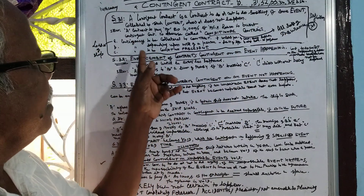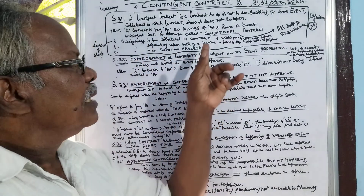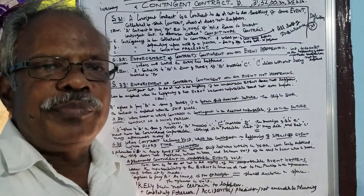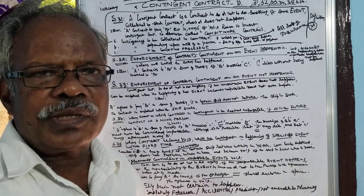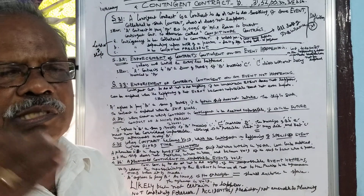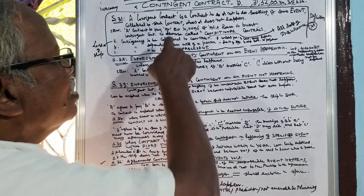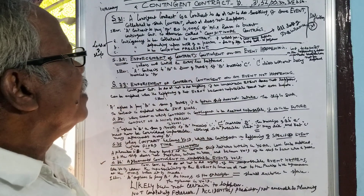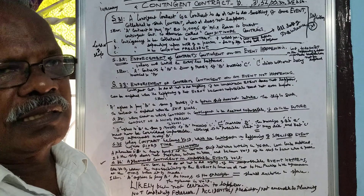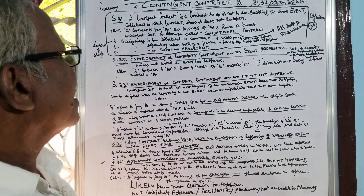Illustration: A contracts to pay B rupees 10,000 if B's house is burned. So it is unforeseen. If B's house is burned, 10,000 will be given by A to B. This type of contract is called a contingent contract.